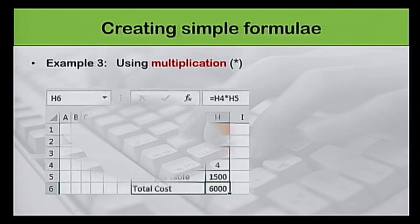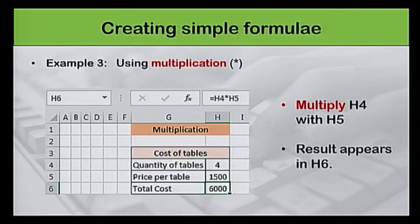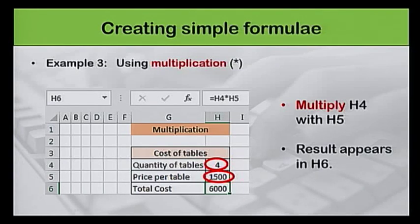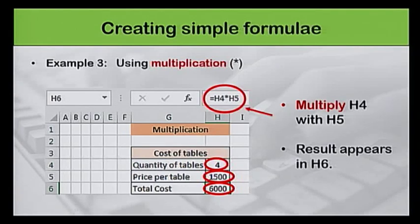In our next example, we will use multiplication to calculate the total cost of 10 tables. The quantity of tables in cell H4 is multiplied with the price per table in cell H5. The result appears in cell H6. The formula used here to calculate the total cost is equal to H4 multiplied by H5.